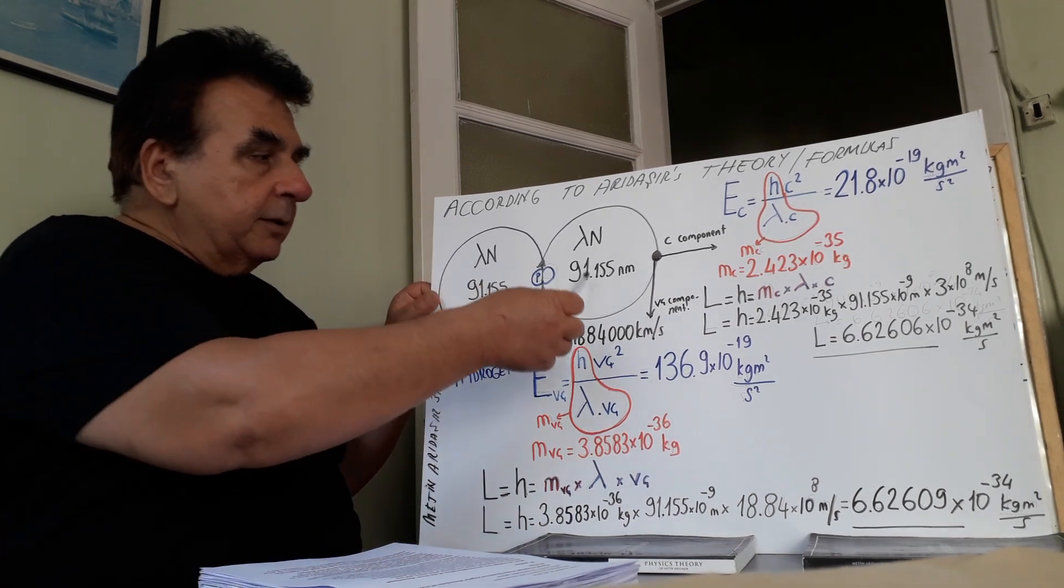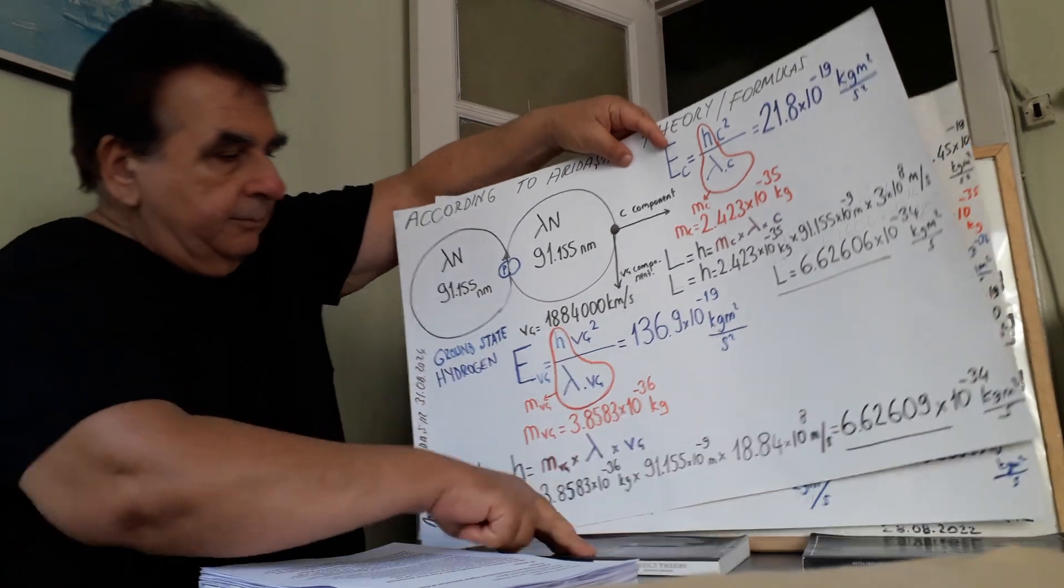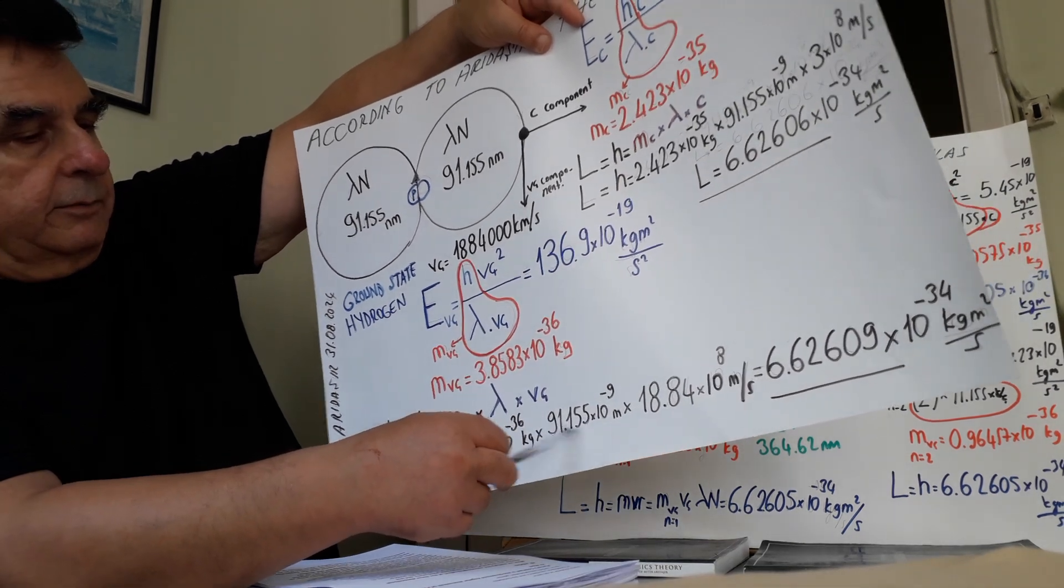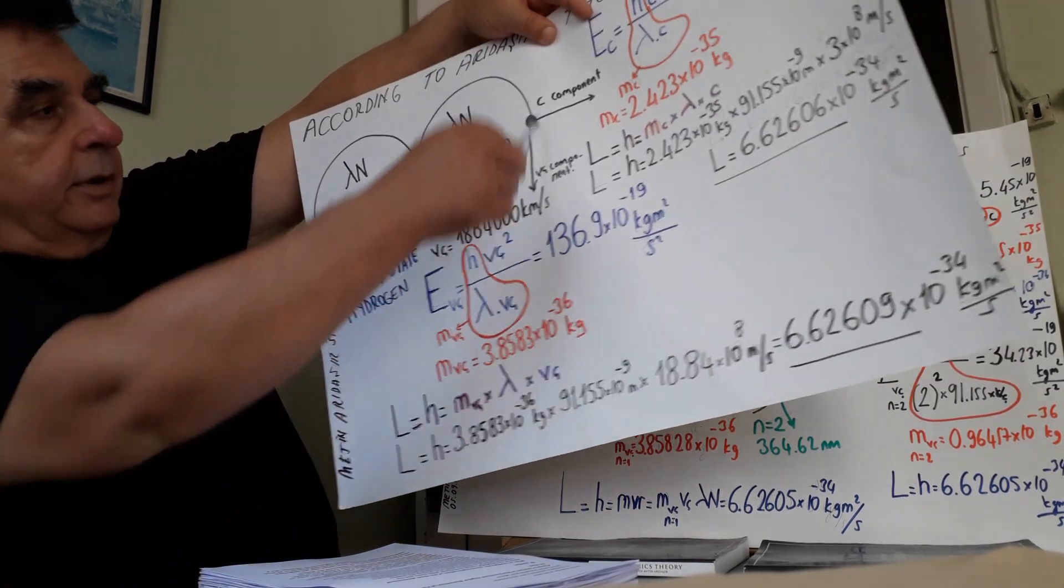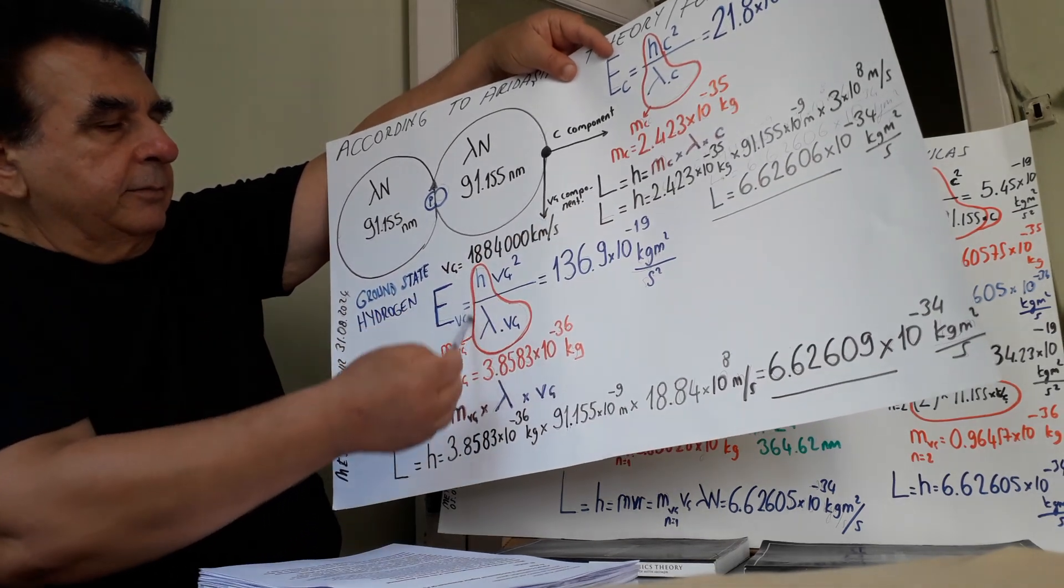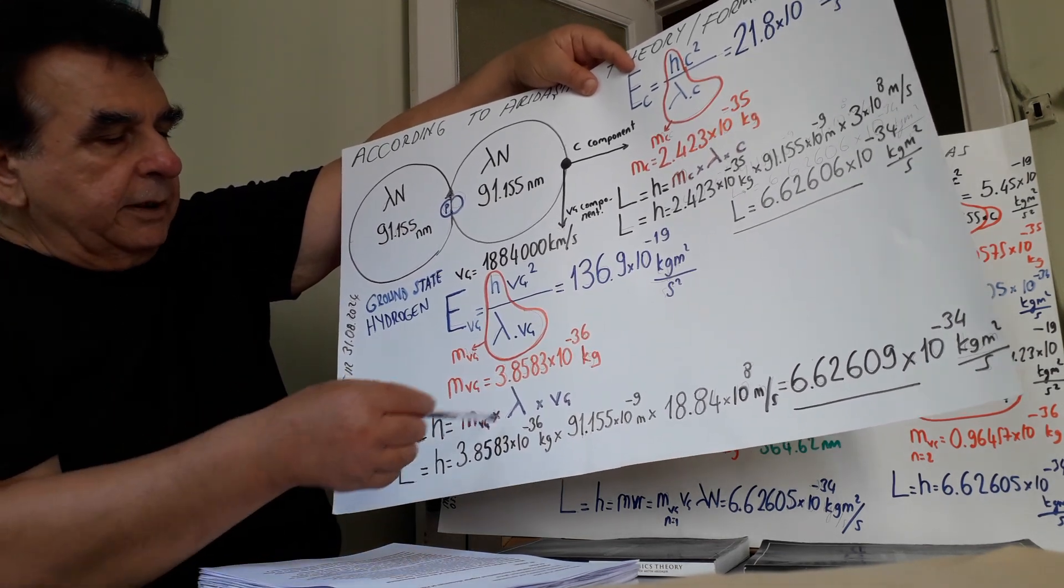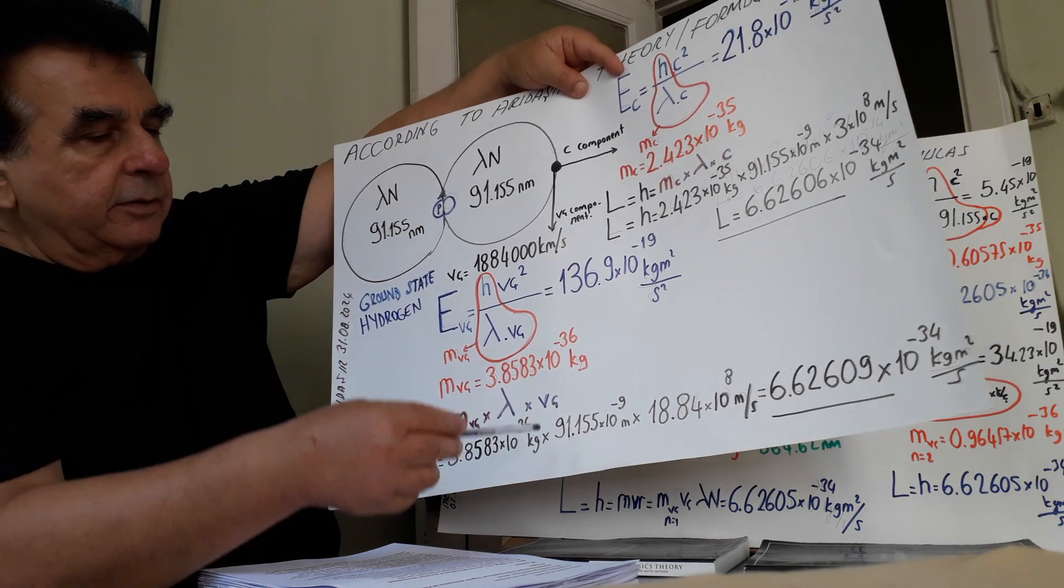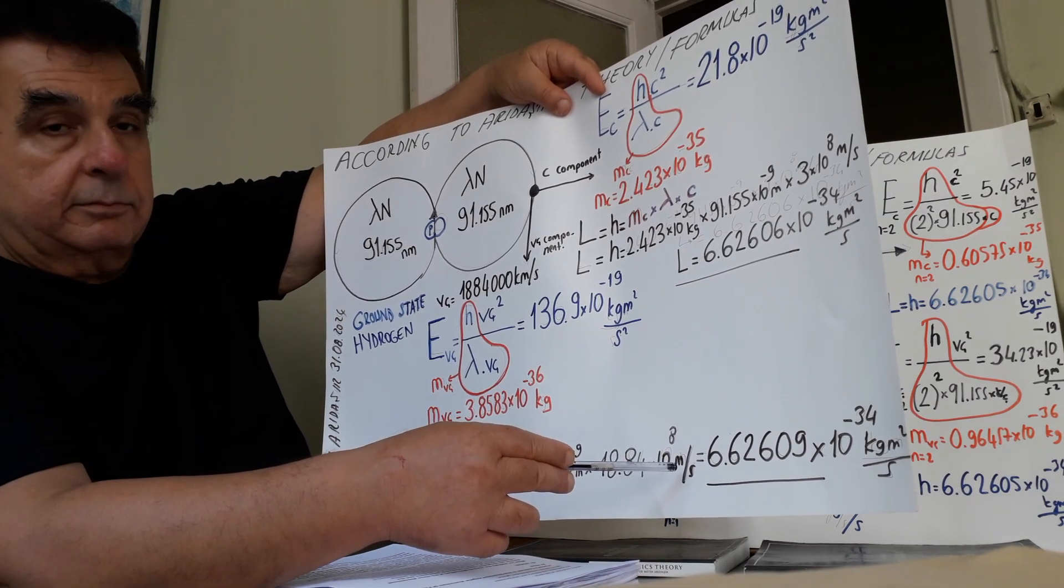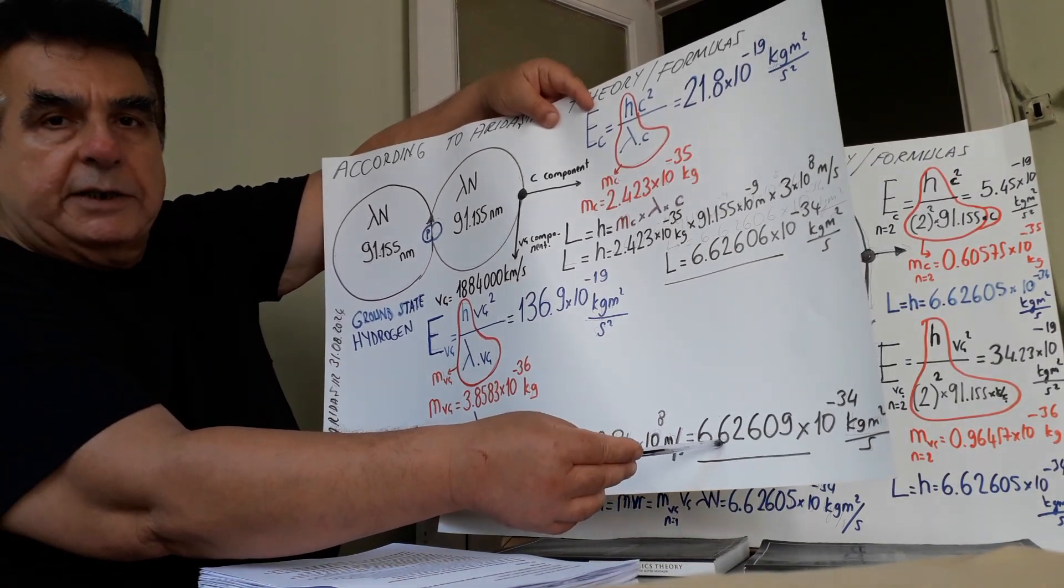When we multiply 91.155 nanometer, Planck's constant. You can span right now. And this is 20.158 nanometer. 18.84 times 10 to the 8 meter per second, or 1,884,000 km per second. This is what? This is Planck's constant, angular momentum.